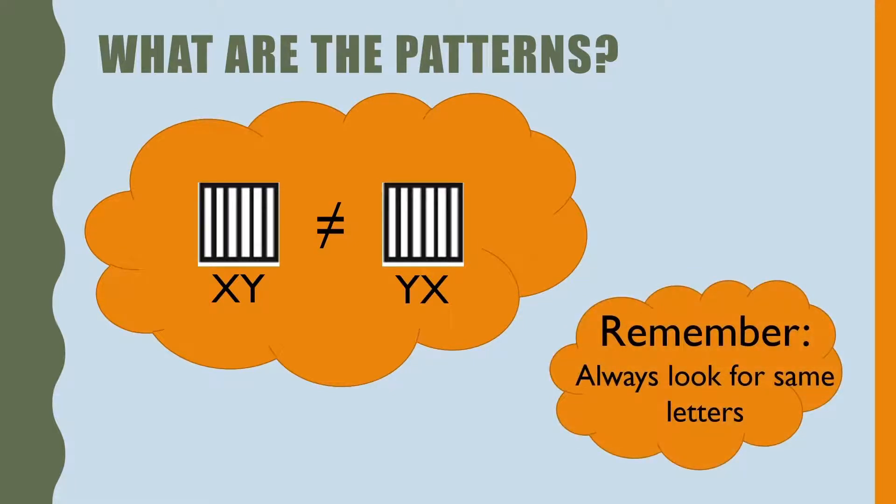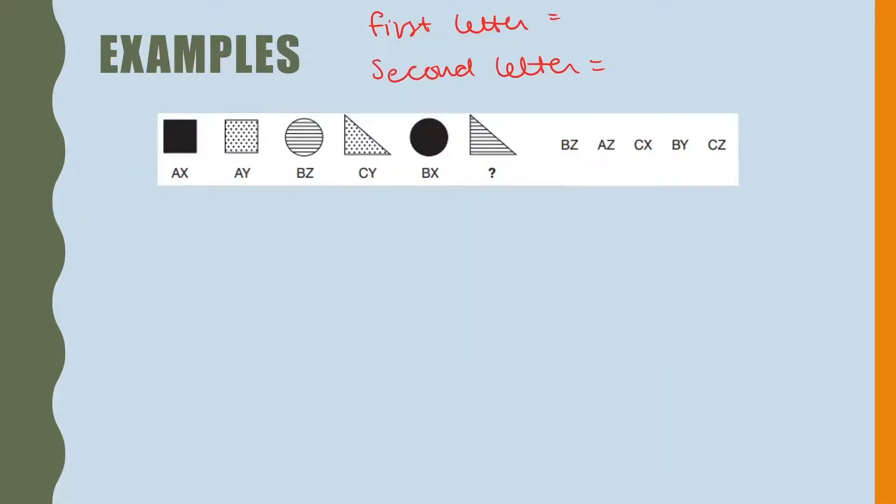We also have to remember to look for the same letters. Each of these letters corresponds with a pattern. Let's have a look at an example. This question is asking us to find the code for this triangle.